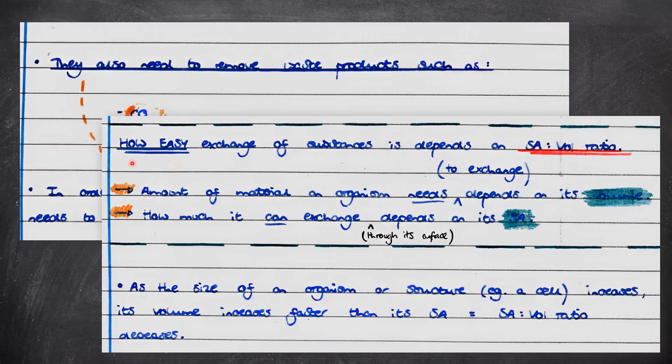How easy exchange of substances is depends on its surface area to volume ratio. The amount of material an organism needs to exchange is affected by its volume, and how much it can exchange through its surface is affected by its surface area.